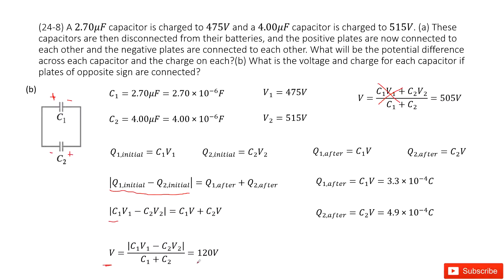Inputting the given quantities, we get the answer V equals 120 volts. Then we find the charge for each capacitor: Q1 after is C1 times V, and the answer is shown. For capacitor C2, the charge Q2 after is C2 times V, and the answer is shown.